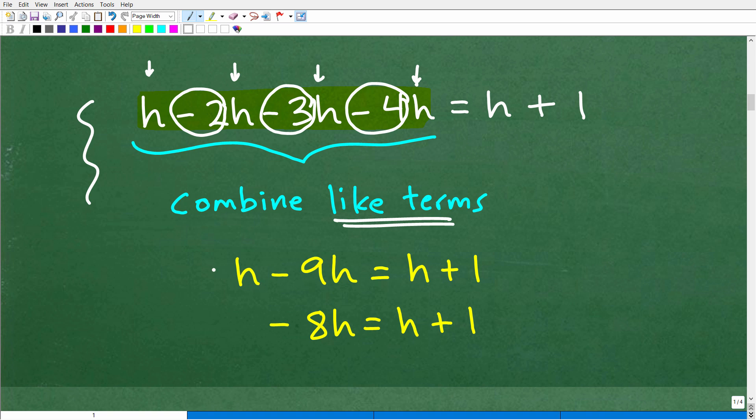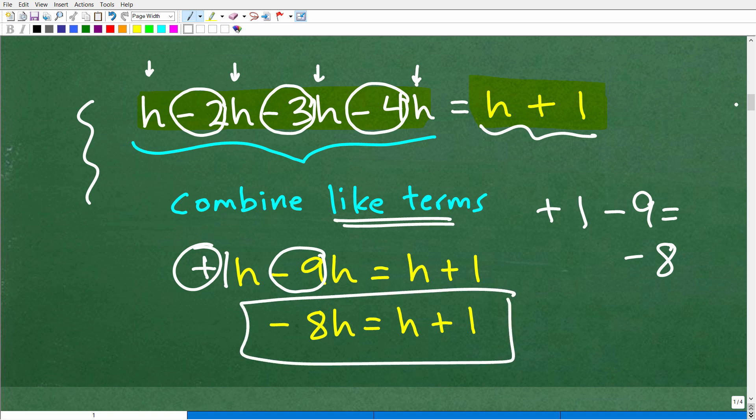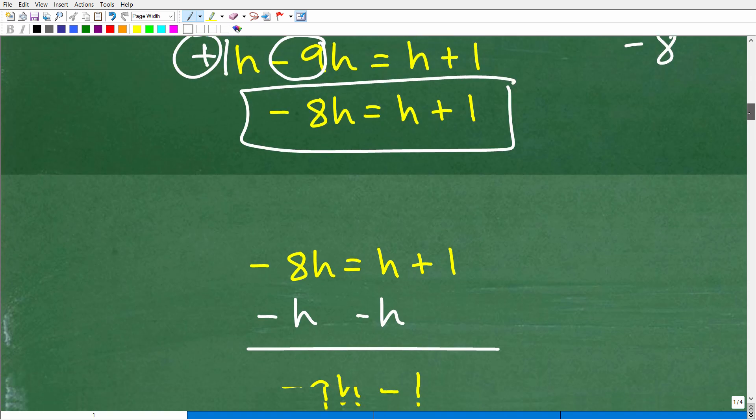This is perfectly fine. This has h minus 9h. Now, look at the signs here. This is a positive value right here. This is a positive 1h, and this is a negative 1h. You've got to be very careful here. So this is positive 1 minus 9, which is going to be negative 8. So 1h minus 9h is negative 8h. And that's equal to h plus 1, because right over here, there is nothing we can do. We just have a variable and a number. We can't simplify, so we'll just leave it like this, and we just focus on simplifying what we can, which is the left-hand side.